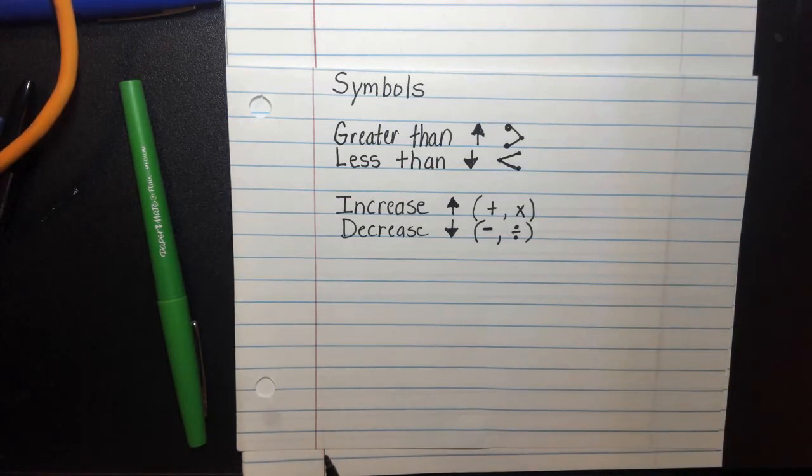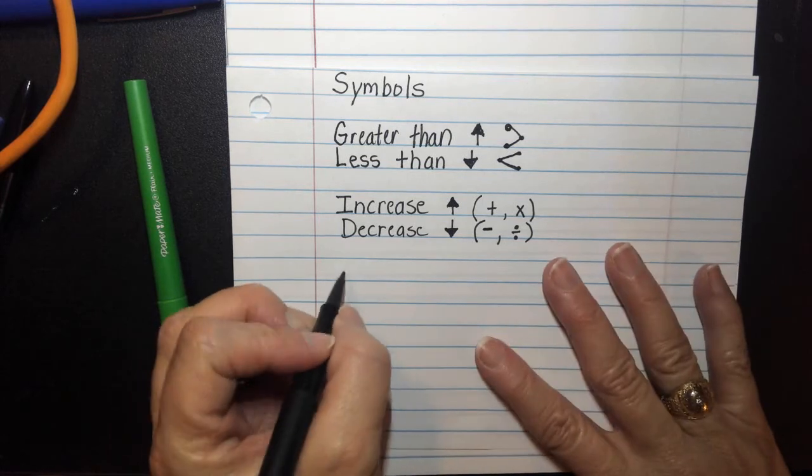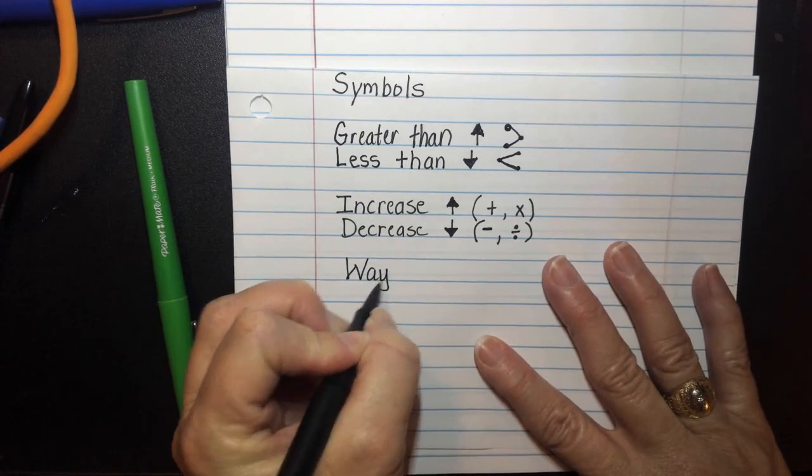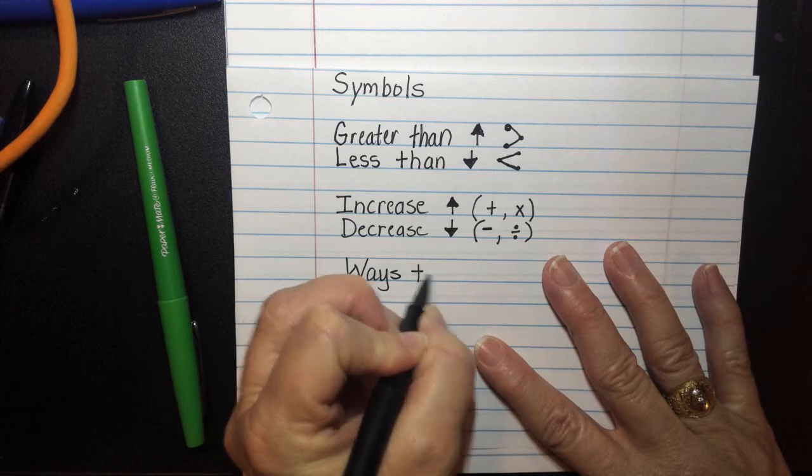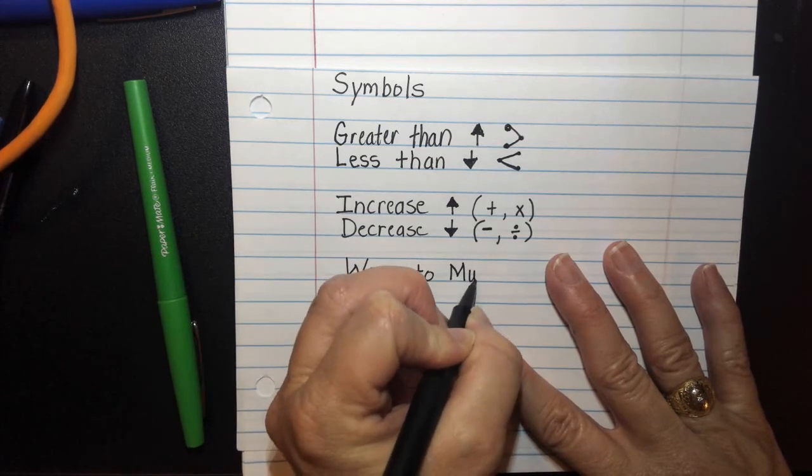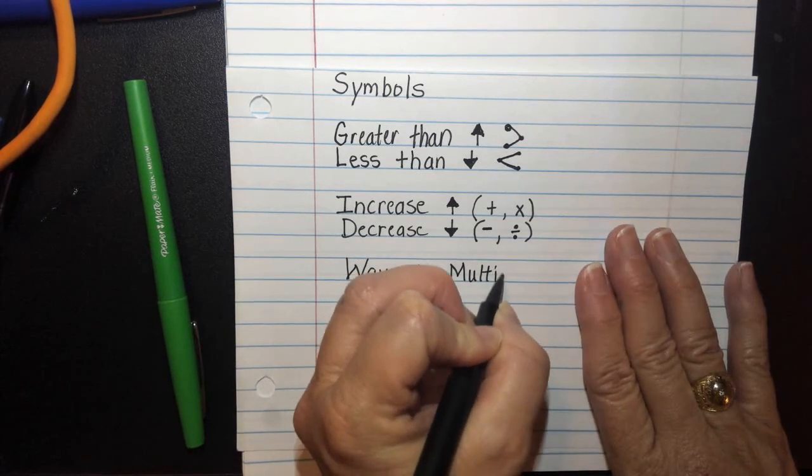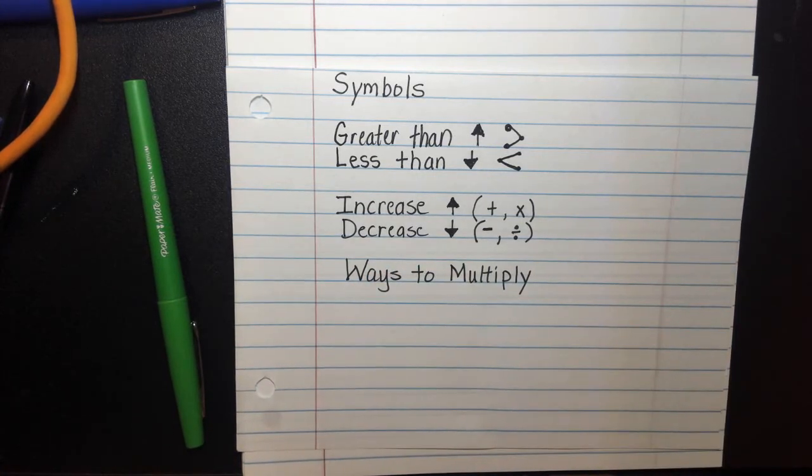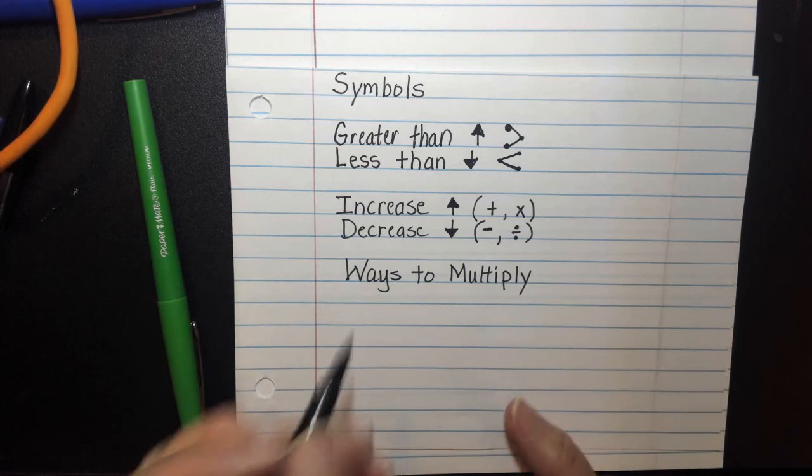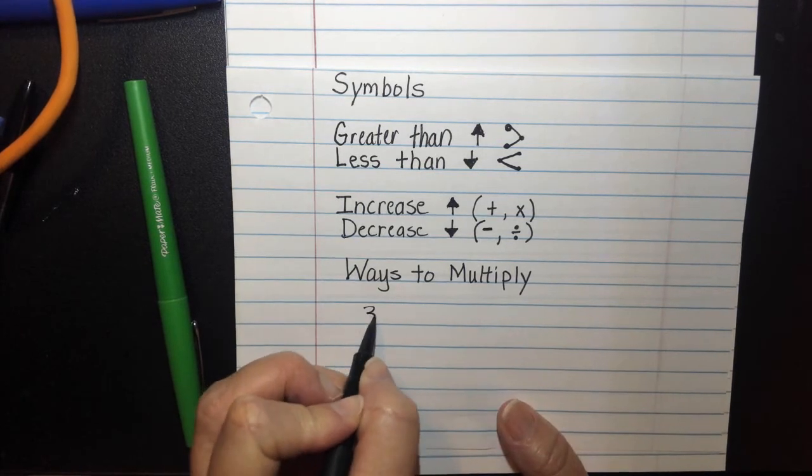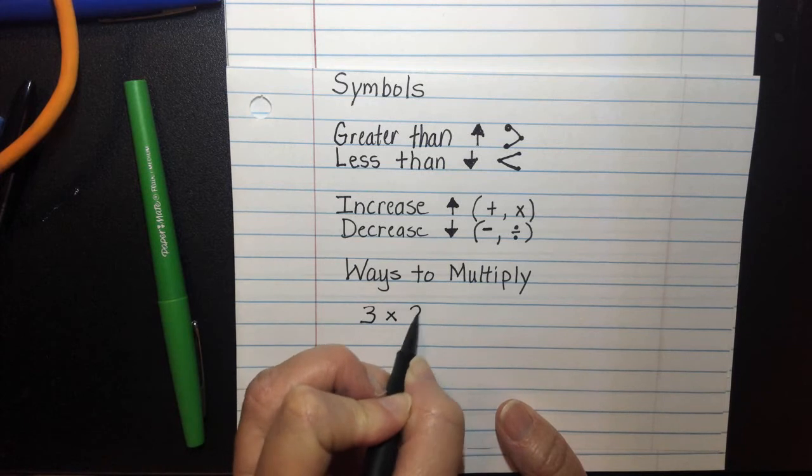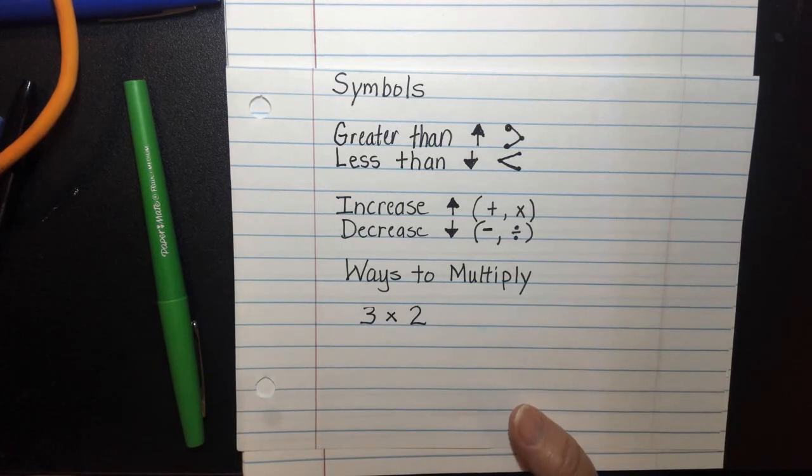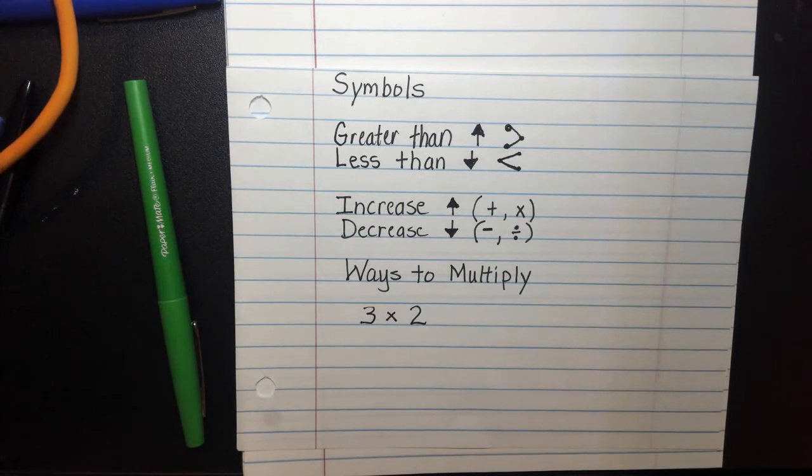And last of all, we're going to add ways to multiply. So in fifth grade, we have different ways that we use the multiplication symbol. I know in third grade, when you were first introduced to multiplication, you used the x. So your teacher probably wrote something like 3 times 2. And then they would expect you to answer 6.